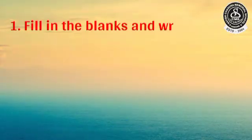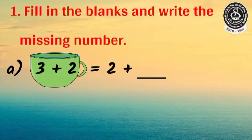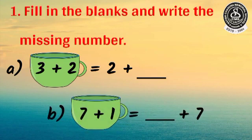Here is question number 1. Fill in the blanks and write the missing number. A: 3 plus 2 equal to 2 plus dash. B: 7 plus 1 equal to dash plus 7.